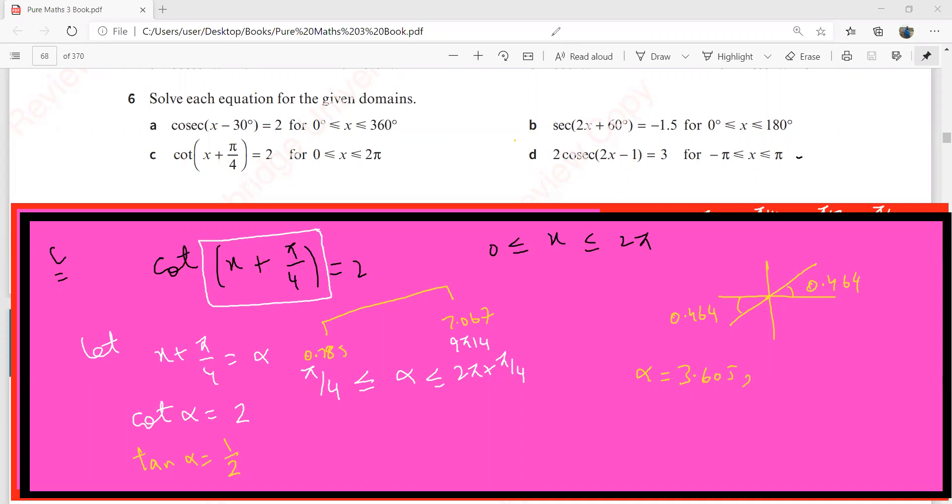I've taken this as my first value. Now let me see if this can be my second value. This is 2π plus the reference angle, which gives 6.745. Can I take 6.745? Yes, this is still within the range. These happen to be the only two solutions for tan alpha equals half.